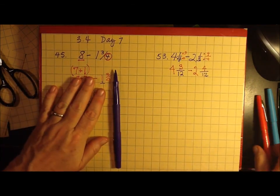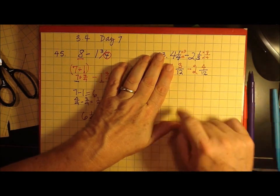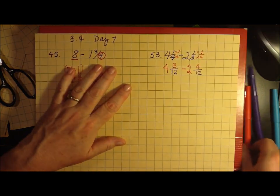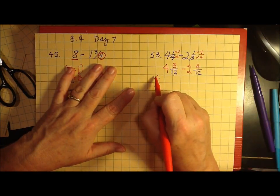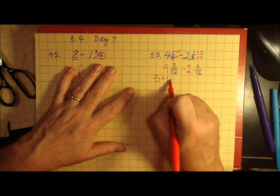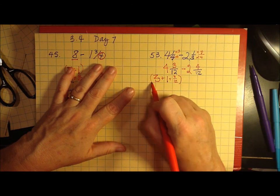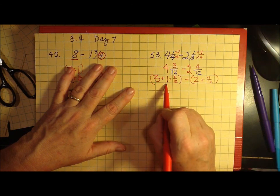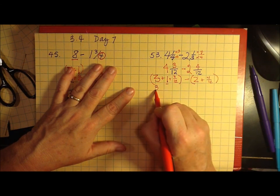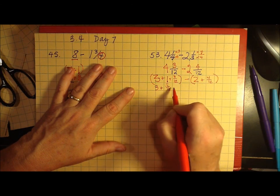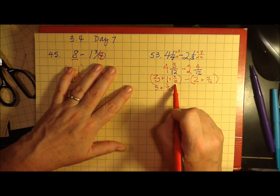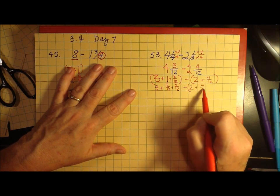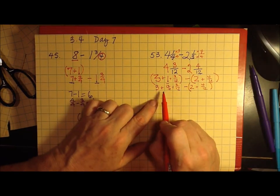Now I have a problem because I can't subtract four-twelfths from three-twelfths, so I have to borrow something from this. So remember, I could rewrite this as 3 plus 1 plus three-twelfths minus 2 plus four-twelfths. I'm going to turn this 1 into a fraction. So I have 3 plus 12 over 12, I use twelfths because I have 1 there, plus 3 over 12 minus 2 plus 4 over 12.